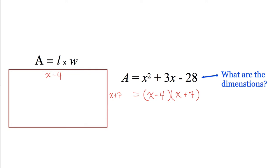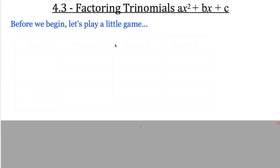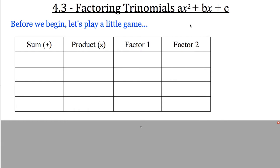Let's put this into some practice. Before we practice this, we're going to play a little game. I'm going to give you a number and you're going to have to tell me what two numbers add up to it. If I give you 7, we're looking for two numbers that sum to 7. But there's a caveat: they also have to multiply to 12. So we're looking for two things that add to 7 and multiply to 12. Going through the options: 1 and 6 don't multiply to 12. 2 and 5 don't multiply to 12. 3 and 4 — well, 3 times 4 does multiply to 12. So 3 is our first factor and 4 is our second factor.